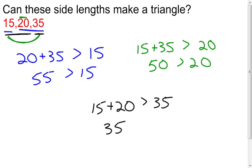The Triangle Inequality Theorem says that that has to be greater than 35 to make a triangle. Well, add these together, it's 35. Is 35 greater than 35? The answer is no.